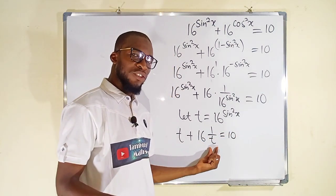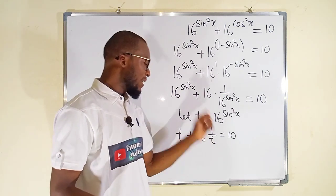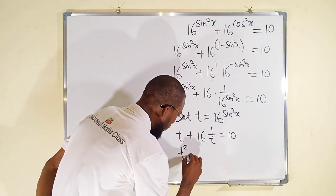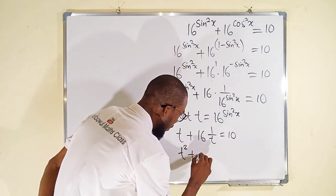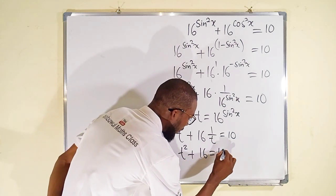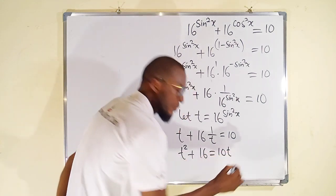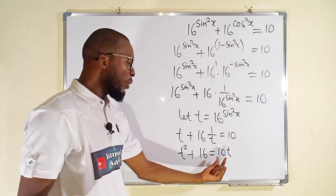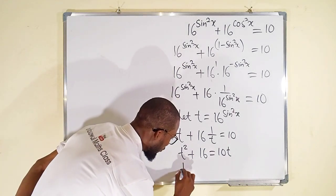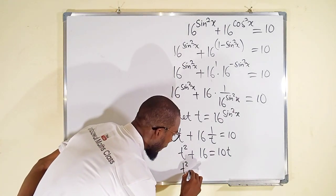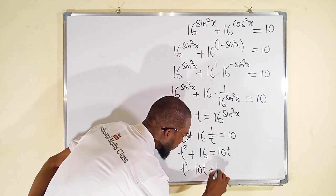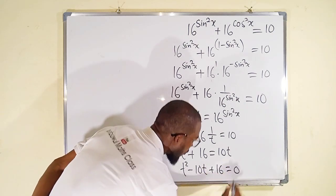To get rid of the fraction, we can multiply each term by t. So this becomes t squared plus 16 equal to 10t. We can bring 10t to the left side, so it becomes t squared minus 10t plus 16 equal to 0.